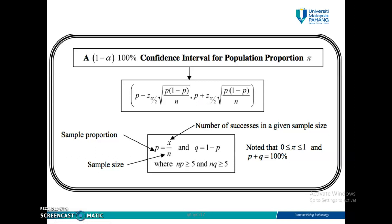This formula is given in your statistical table. You can look at page 6 of your statistical table. At the very bottom row, you can see Confidence Interval for pi. The formula is given but you must know what the values are. P is a sample proportion; Z alpha over 2 is a value that you get from the statistical table — this Z refers to the Z table that you have learned before. This is the standard deviation, and pi should be between 0 and 1.